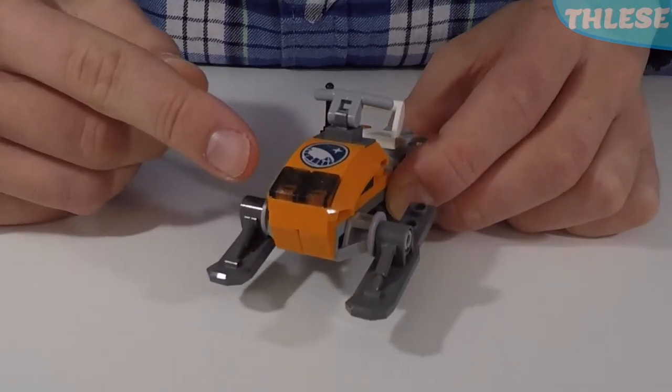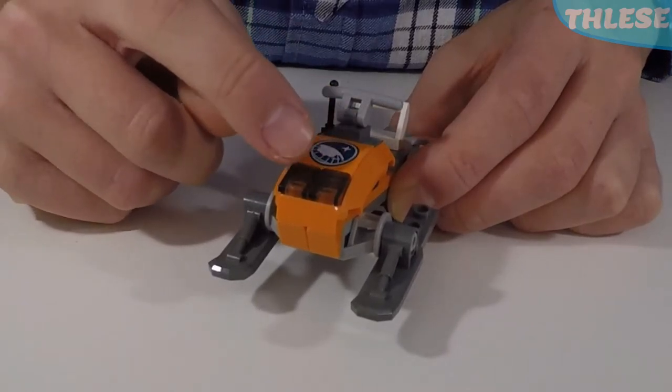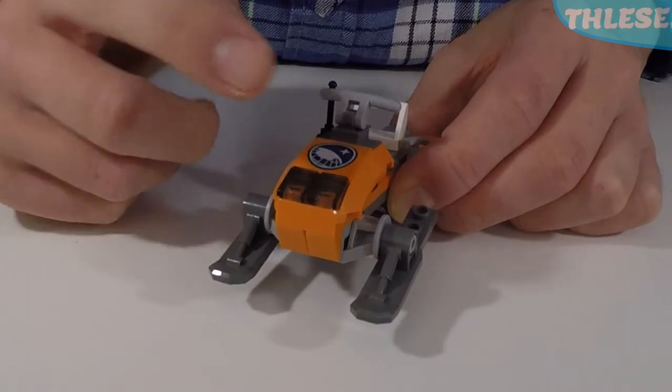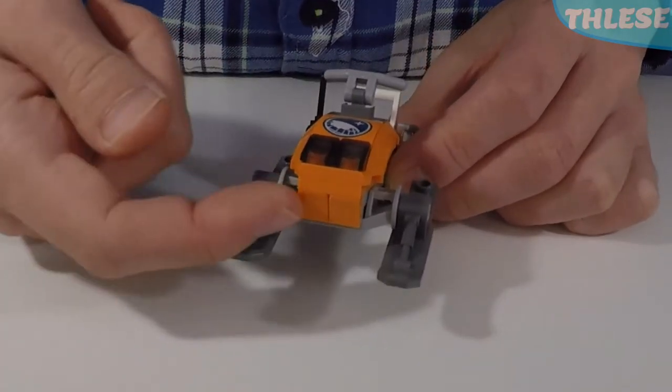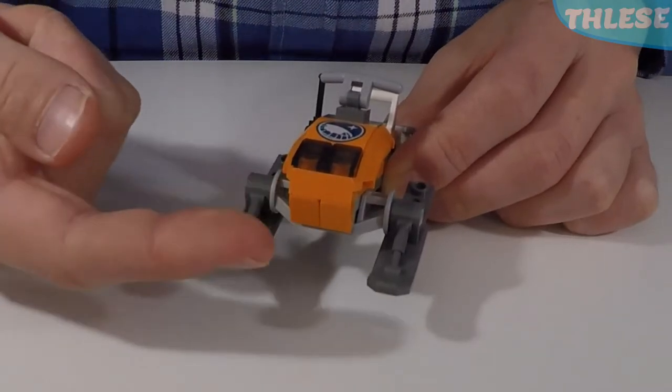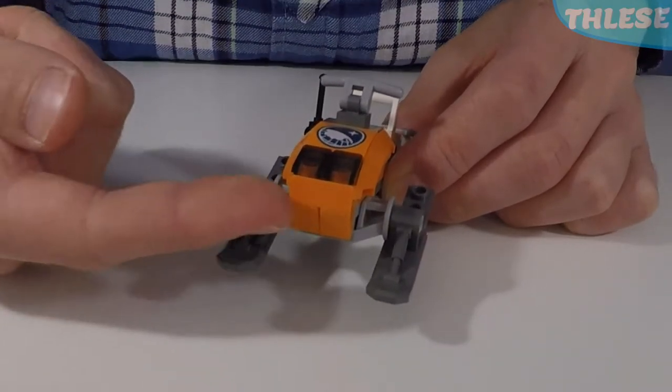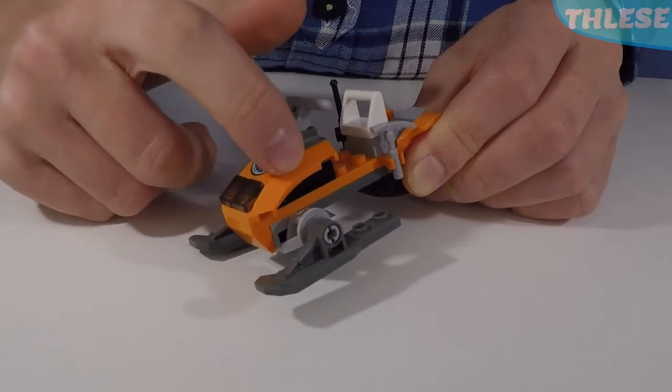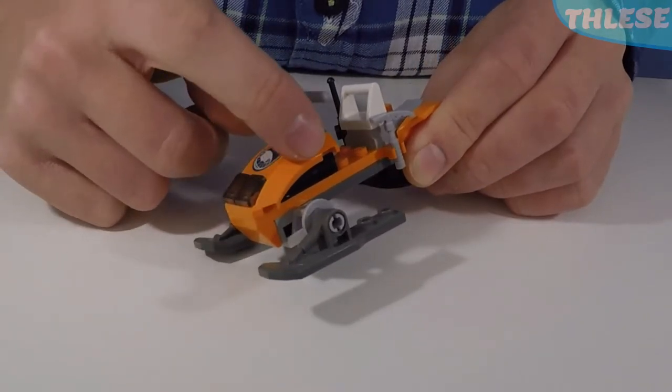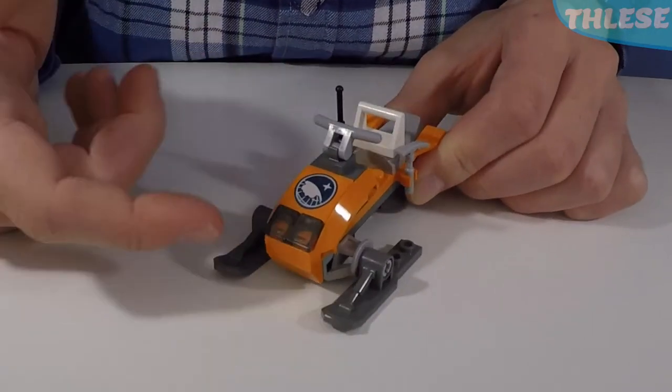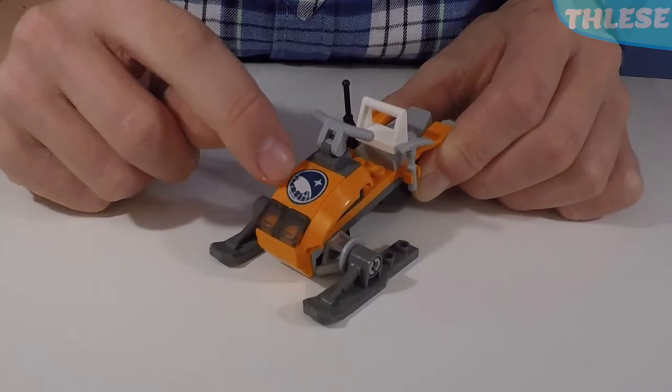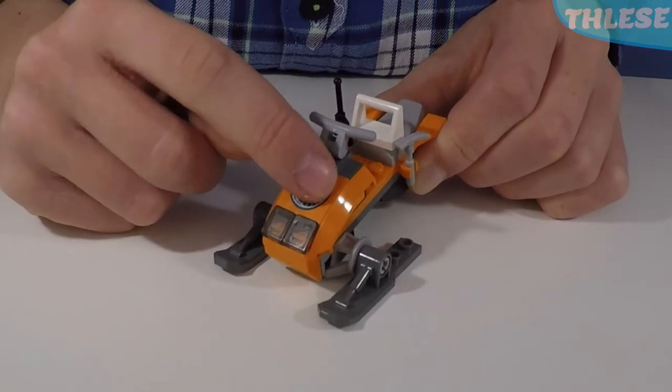So at the front we have these dark tinted headlights made out of cheese slopes. And we have these extra cheese slopes to give it a little bit of stub so it doesn't catch on the snow. Up here we have these mud guard style pieces even though there isn't any mud, but it does give it a nice design to the snowmobile's front. And we have a slope piece which has a print on it of the Arctic Explorers logo.